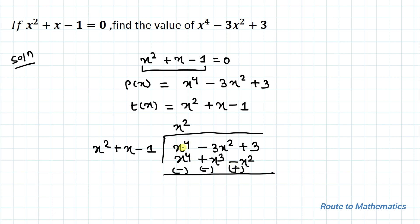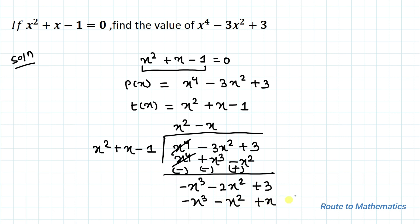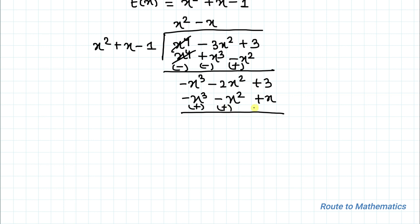The positive x⁴ and negative x⁴ cancel out. We don't have any x³ term, so we directly write -x³ - 3x², and -x² plus x² becomes -2x² + 3. To eliminate the x³ term we multiply by -x, giving -x³ - x² + x. Taking the opposite signs, these two cancel out, and -2x² + x² gives -x² - x + 3.